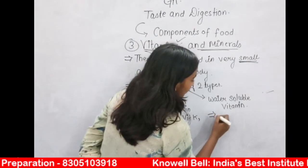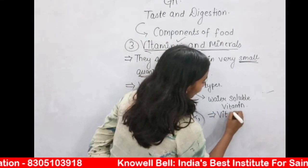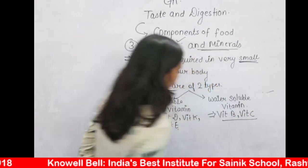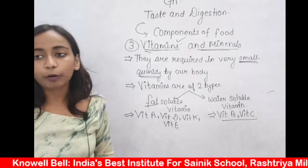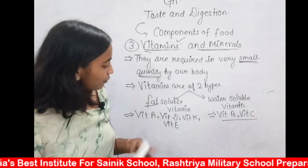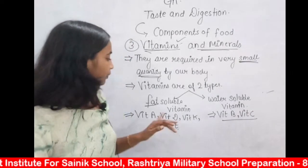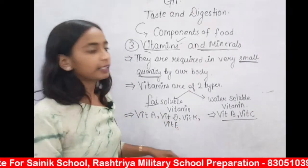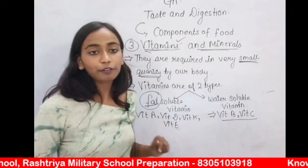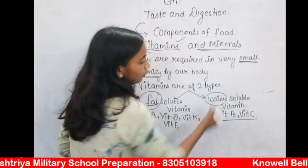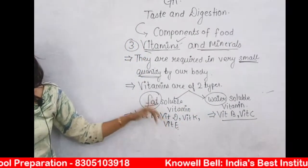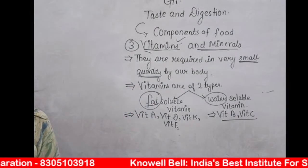Water soluble vitamins are Vitamin B and Vitamin C. In total there are 6 vitamins to keep in mind: Vitamin A, B, C, D, K, and E. Vitamins A, D, K, and E are fat soluble. Vitamins B and C are water soluble — those which are soluble in water. Fat soluble vitamins are those soluble in fat.